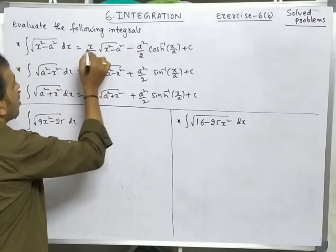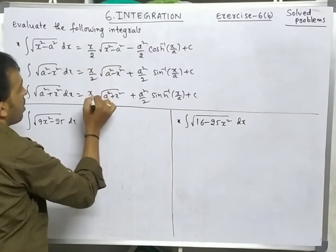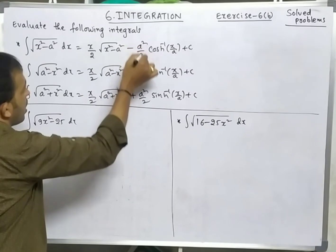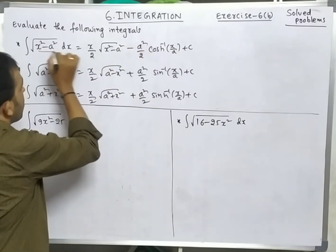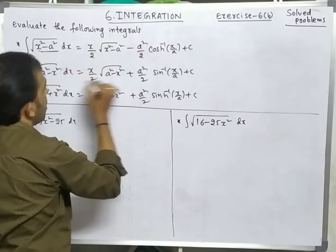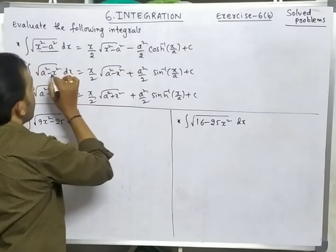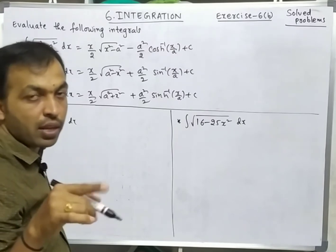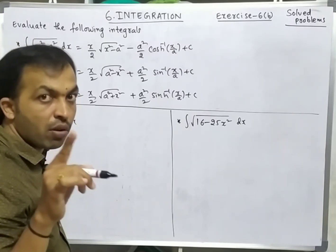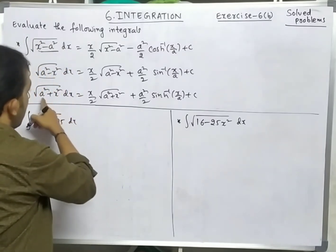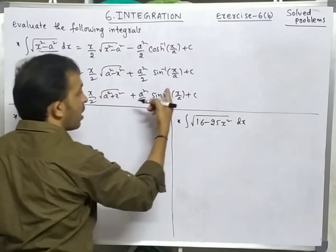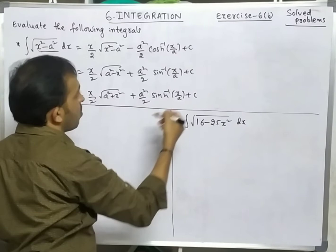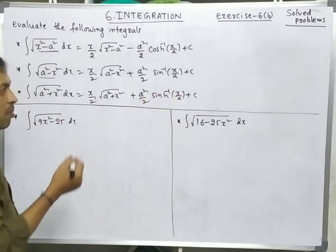First write x/2 · (same integrand) — x/2 for all three forms. Then write a²/2. For the first formula (√(x²-a²)) we have minus; for the remaining two we have plus. The associated inverse formulas: √(a²-x²) links to sin⁻¹(x/a), and √(x²-a²) links to cosh⁻¹(x/a) + c.